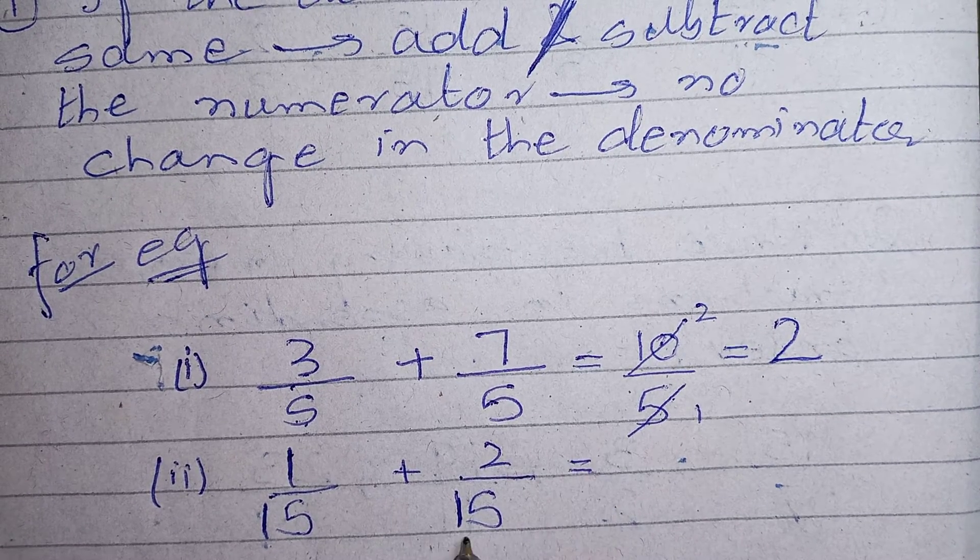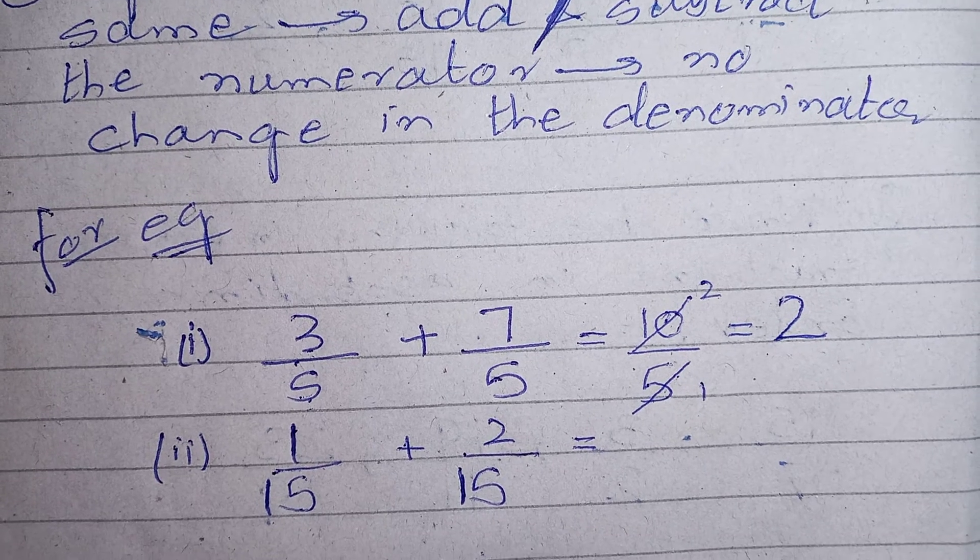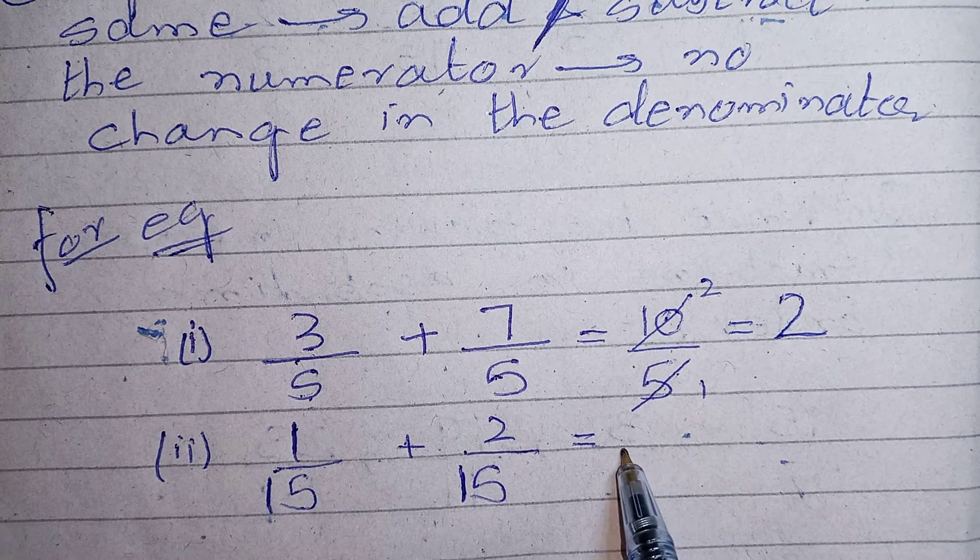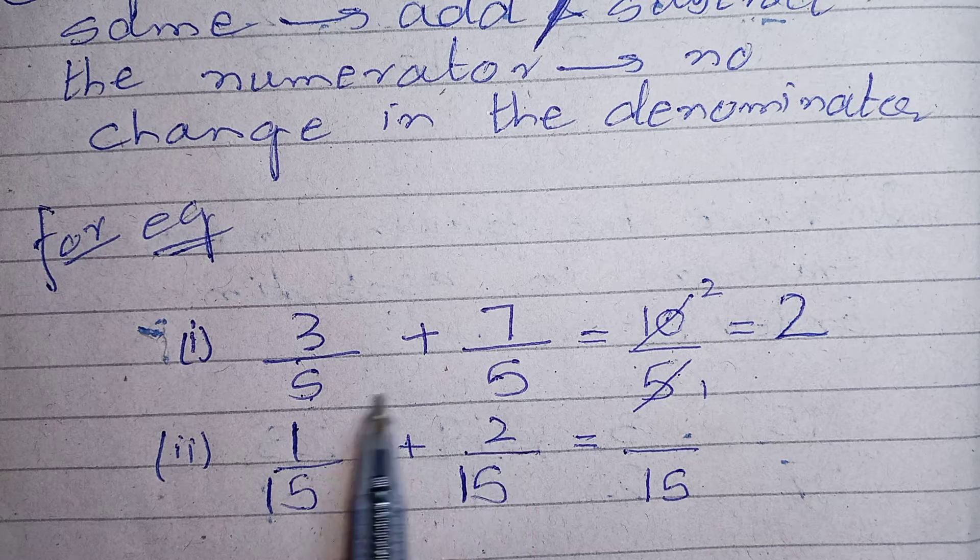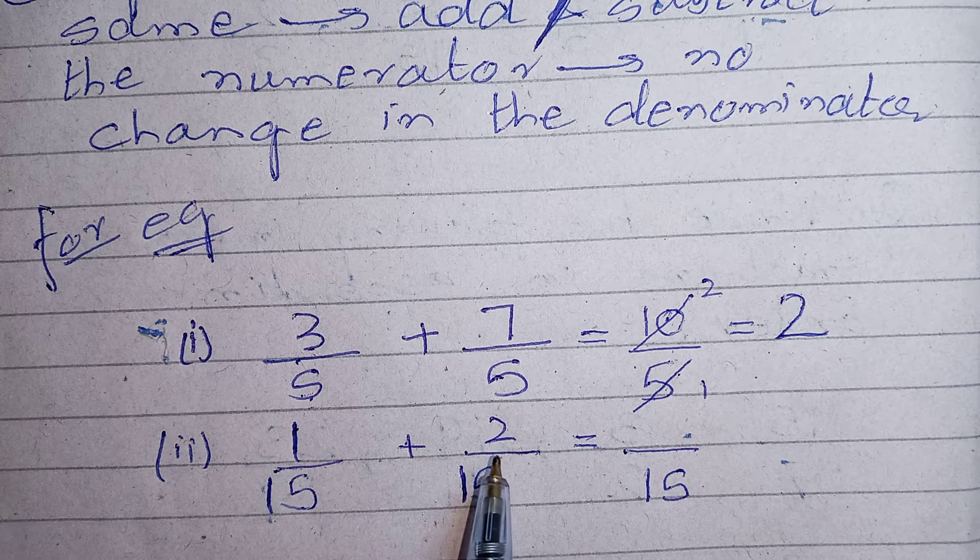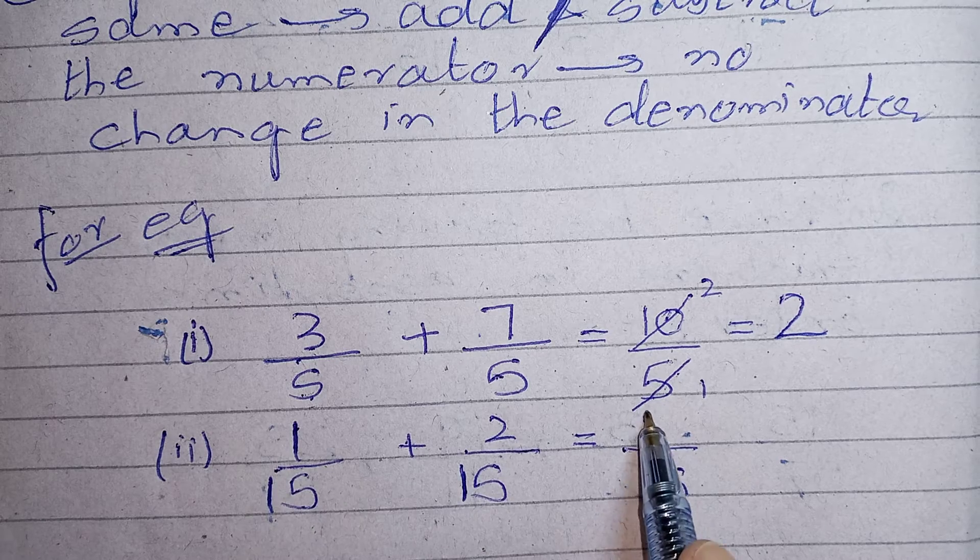What about over here also? I am having 15 as a denominator. Keep the denominator same and add the numerator. What is the numerator? 2 plus 1 is 3.